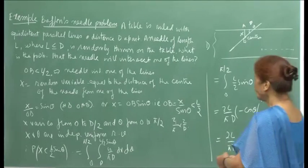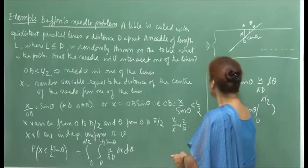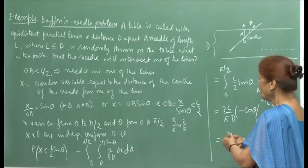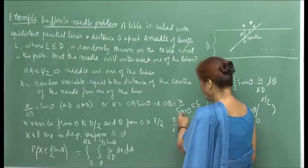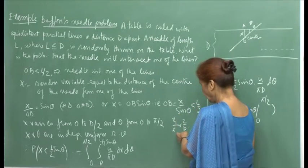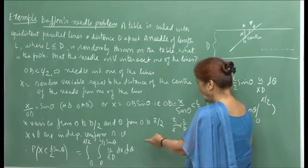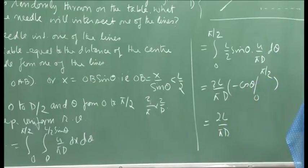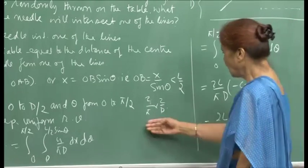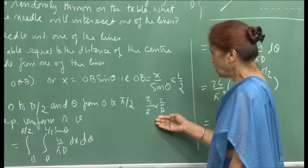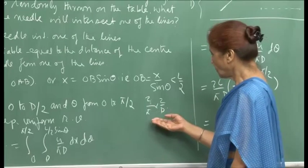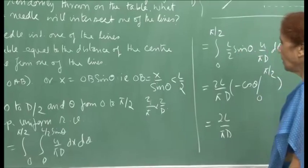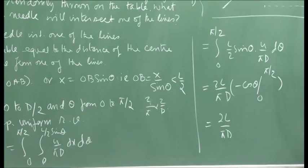The required probability is 2L/(πd). This example uses the independence of the two random variables to compute their joint PDF as the product of the individual marginal PDFs, and then integrates to get the answer.